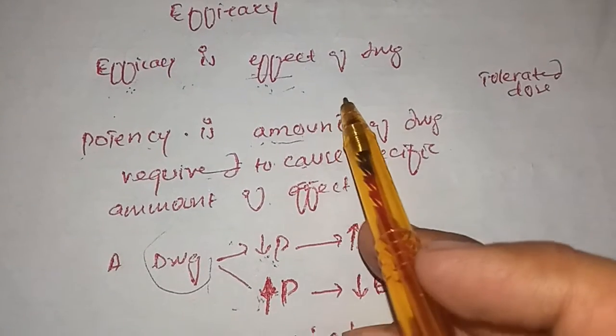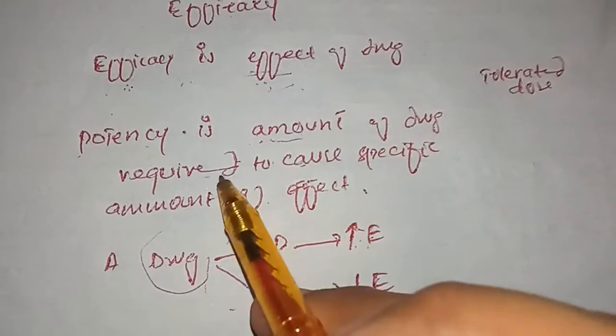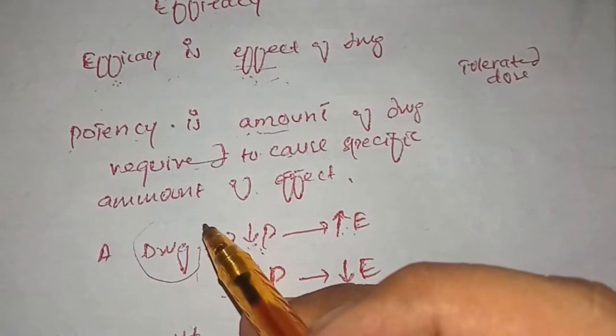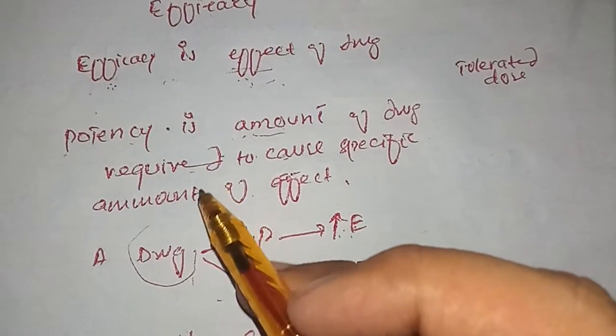Efficacy is already known to us through certain experiments, and potency is also known to us—how potent is a drug. By the way, potency is actually the amount of the drug that we talk about.